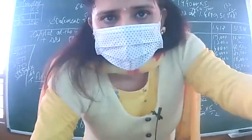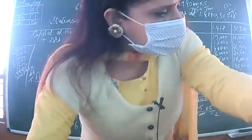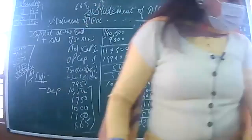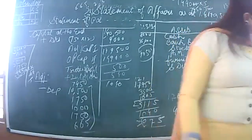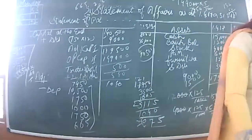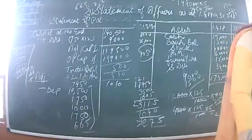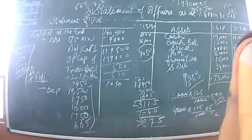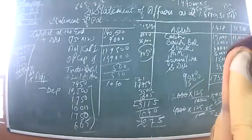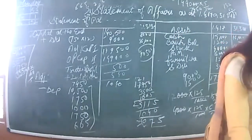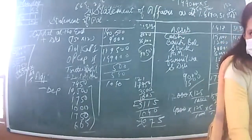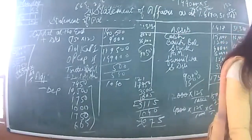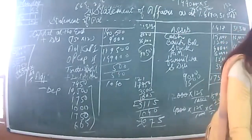Now moving to Question 19 - Raghu maintains his accounts. In Question 19, the opening capital is given, so I only need to prepare one statement of affairs - the closing one. Am I right? Opening capital is being given directly.